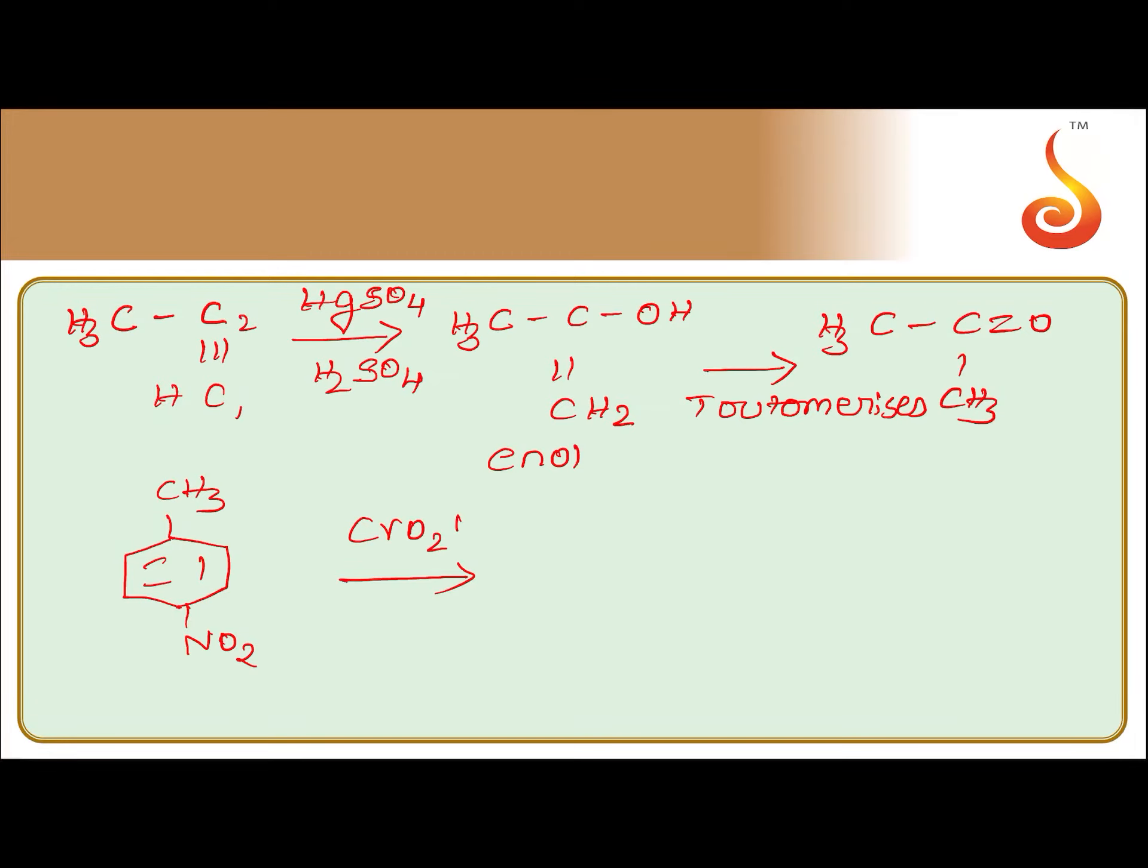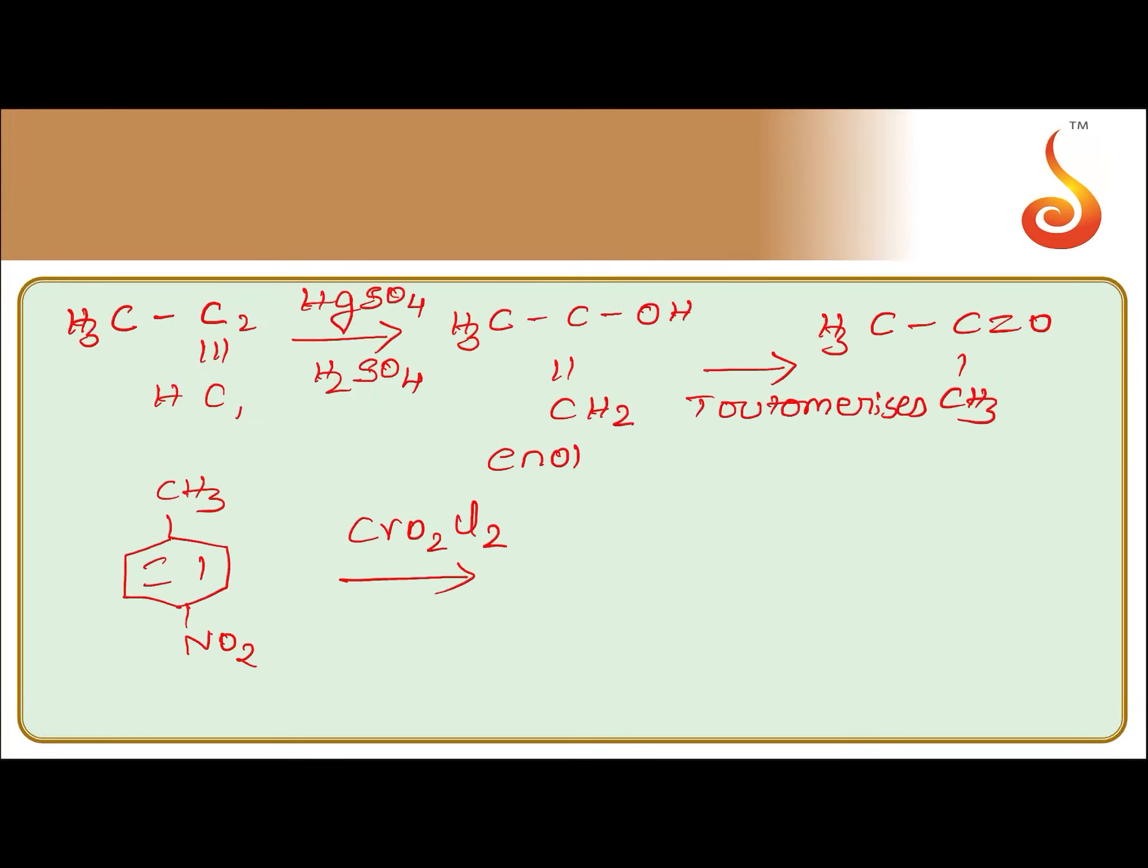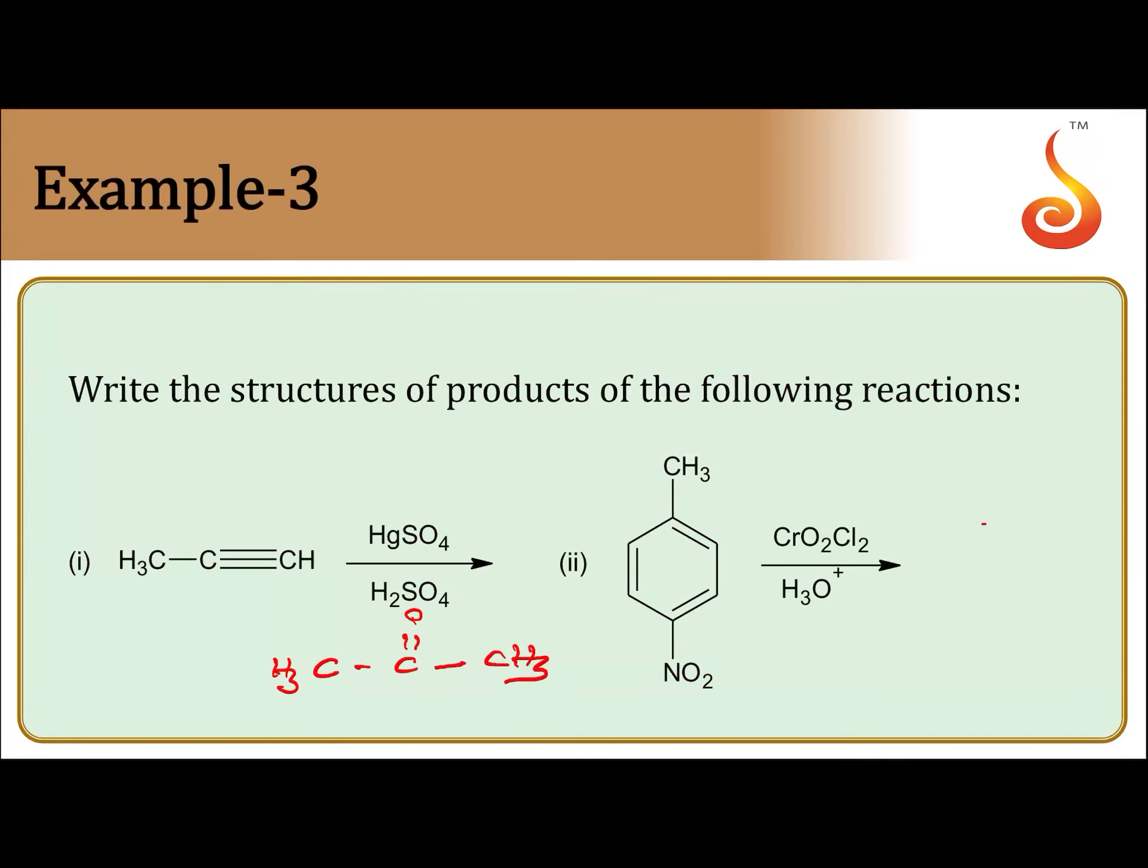Is treated with chromyl chloride CrO2Cl2, then what is this reaction? Etard's reaction. You will get para-nitrobenzaldehyde. Toluene will be converted to benzaldehyde. This reaction is Etard's reaction, so what is the product obtained here? CHO, NO2.